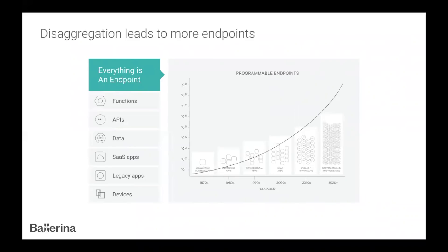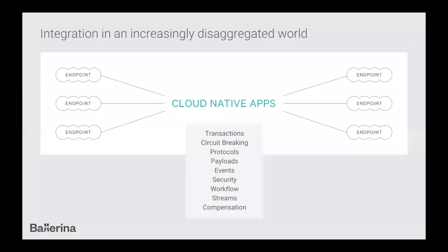These components are all becoming network accessible, whether they're serverless functions, APIs, microservices, data as a service, SaaS apps — everything is becoming a programmable endpoint. Increasingly, when we build applications, we're not just building systems that live on their own, but systems that have to integrate and talk to network programmable endpoints. Every developer I know is creating systems that talk to other network APIs. And there are challenges — distributed computing is not the same as local computing.